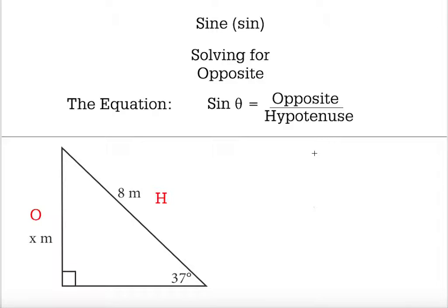Opposite of our angle, 37 degrees, is x, our unknown, and we've got theta being the angle of 37 degrees.